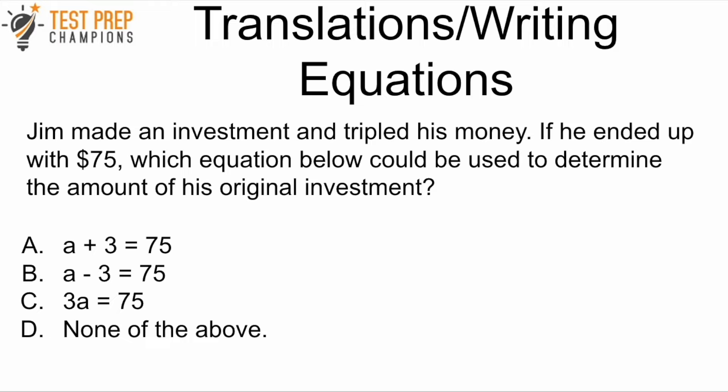Jim made an investment and tripled his money, ending up with $75. Which equation could be used to determine his original investment? The correct answer is C: 3A equals 75. If A is the original investment, and he tripled it to get $75, then 3A equals 75 is the equation you'd use to figure out A.